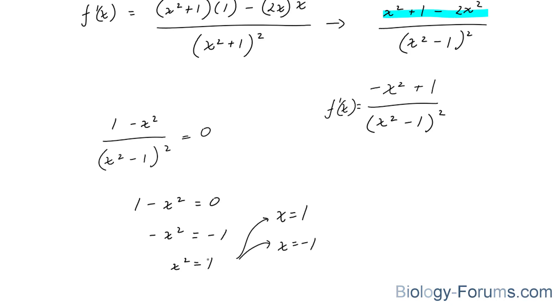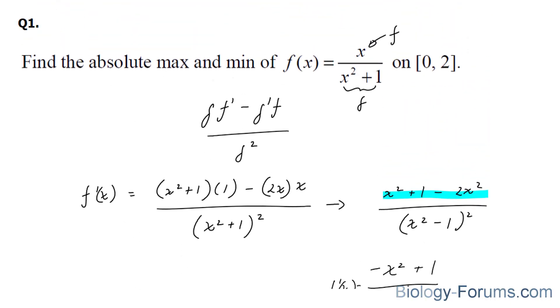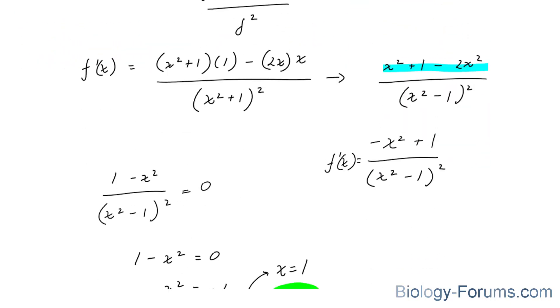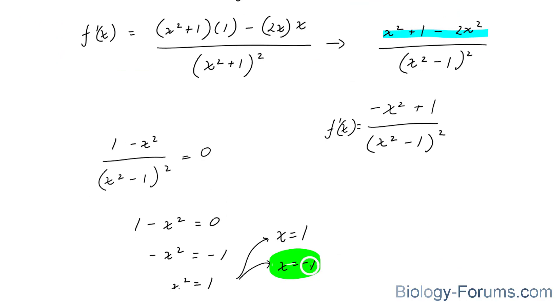Because by square rooting both sides, you end up with a positive and negative version. However, this right here is not allowed. Because if you look at our intervals given from 0 to 2, this is out of range.